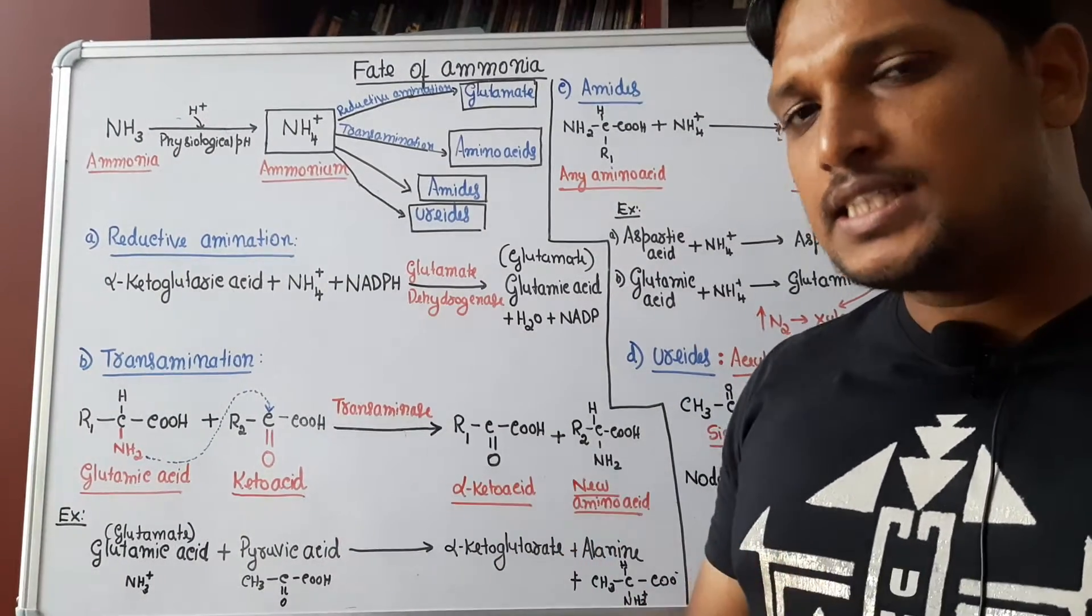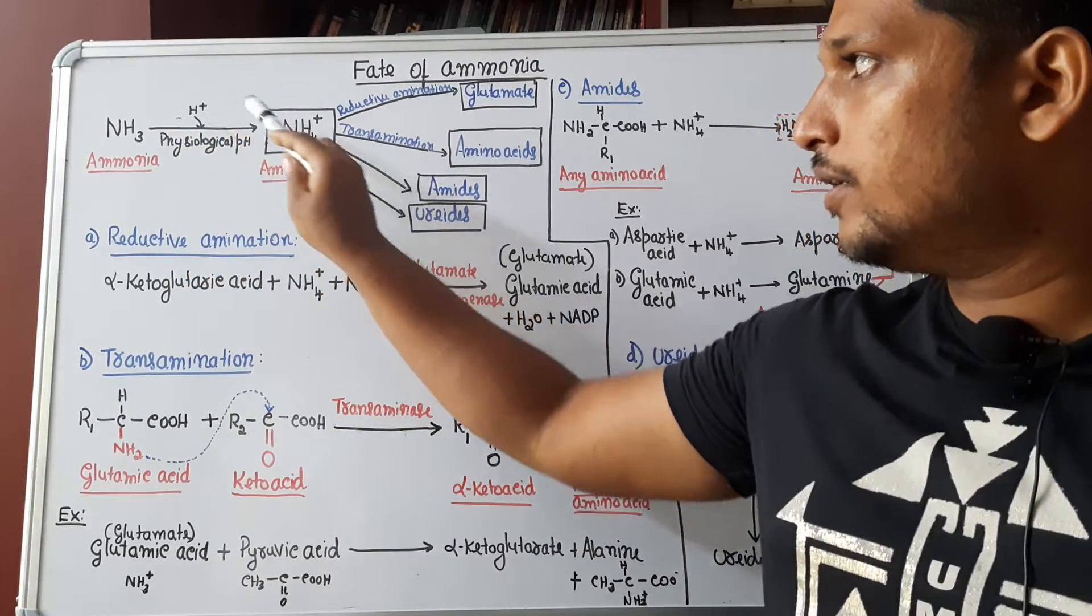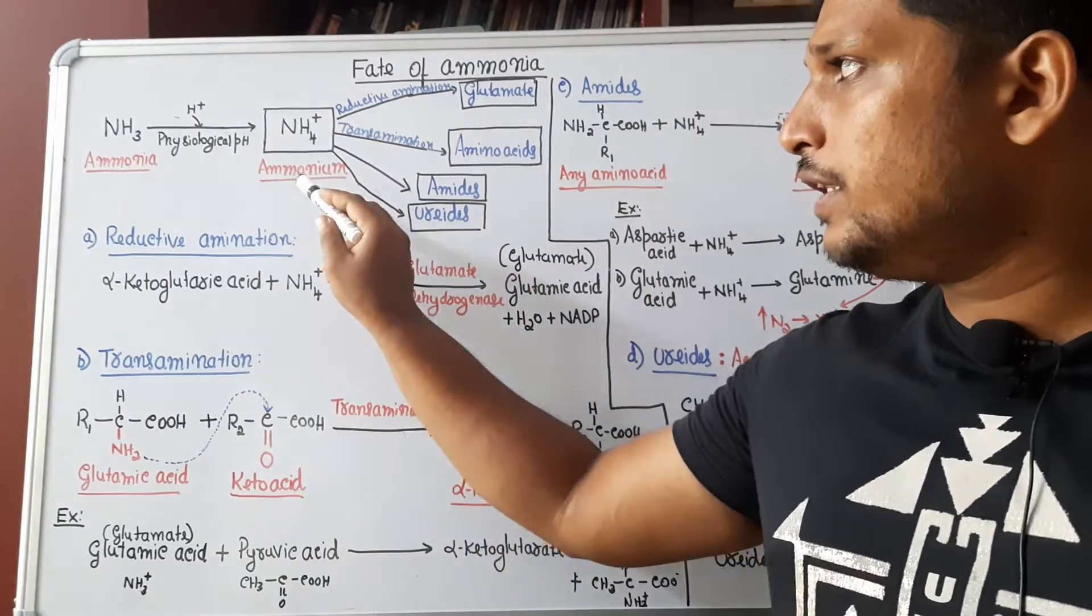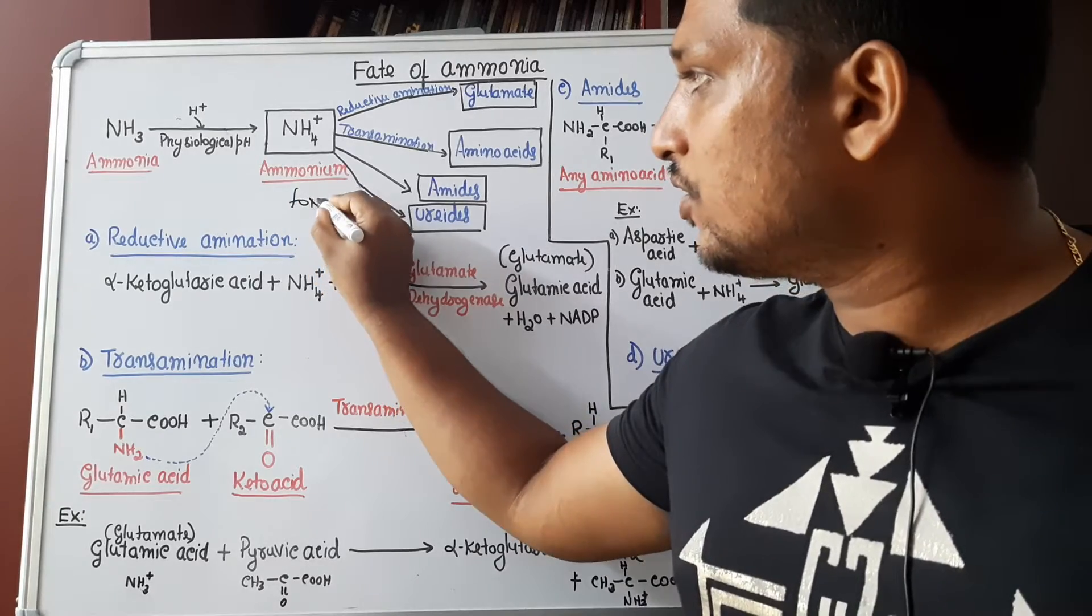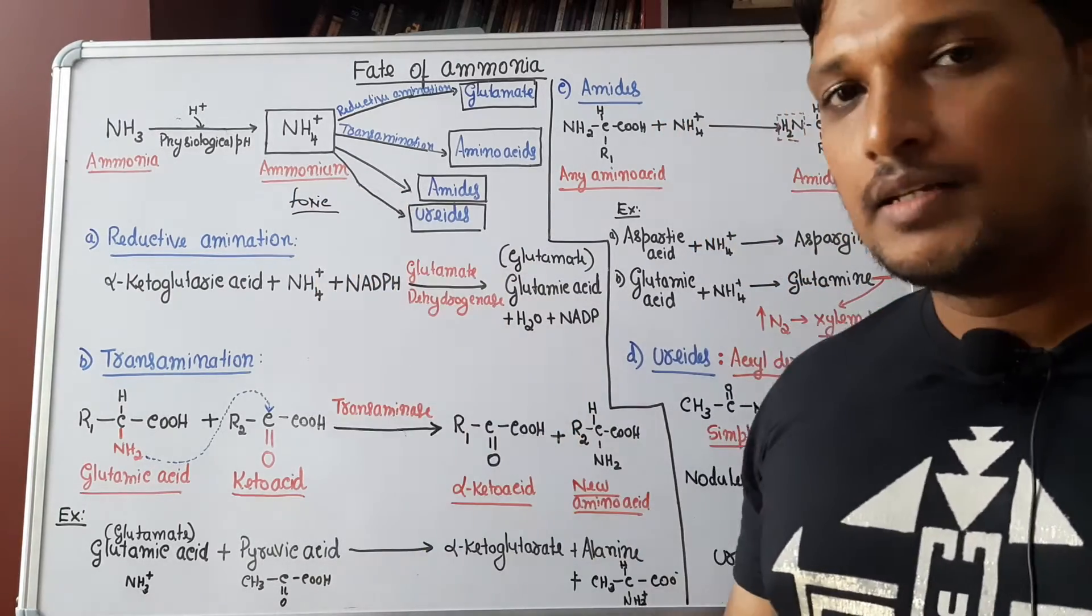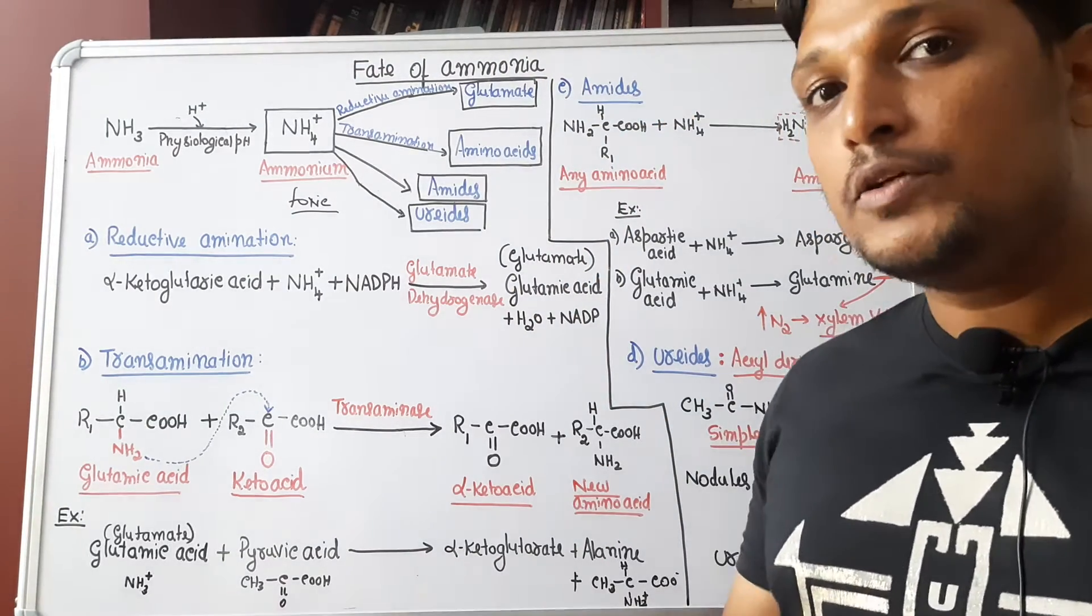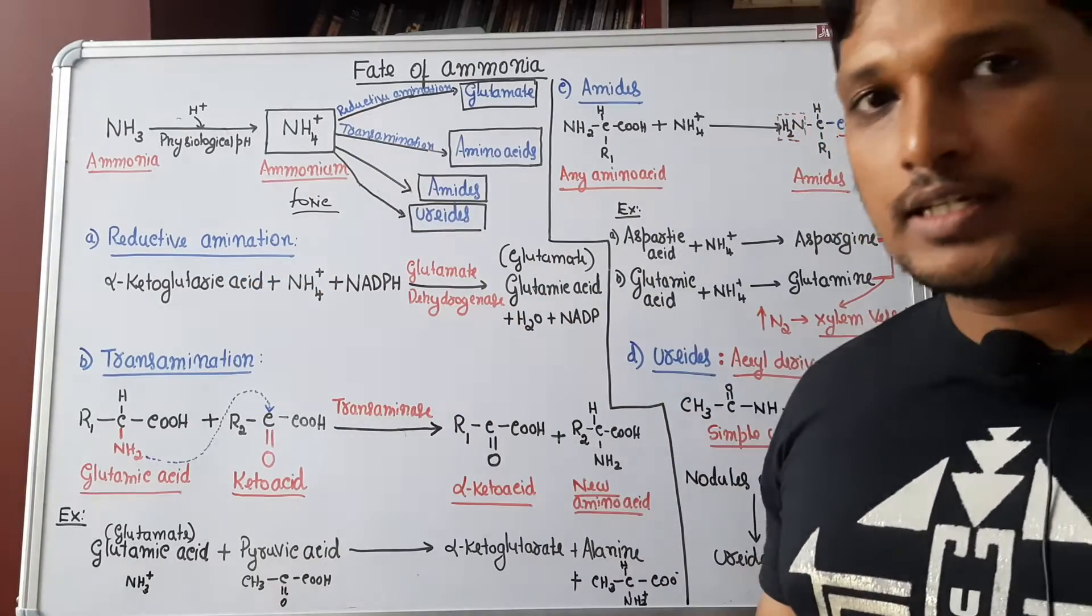This ammonia is unstable. At physiological pH, ammonia gets protonated to form ammonium ion. But the problem with ammonium ion is it is highly toxic form. Hence, plants have to convert them to other non-toxic and useful forms. That process we are going to learn now.